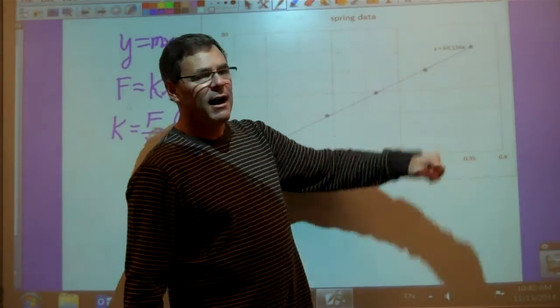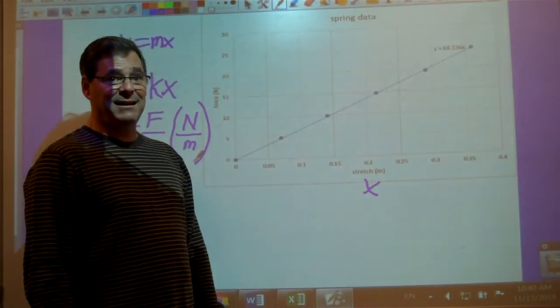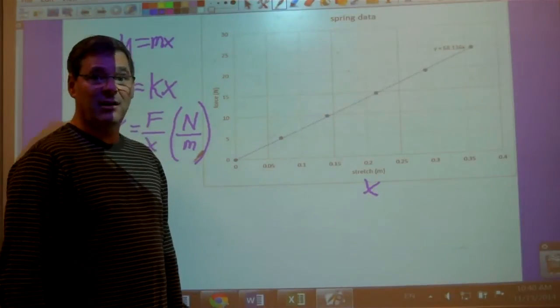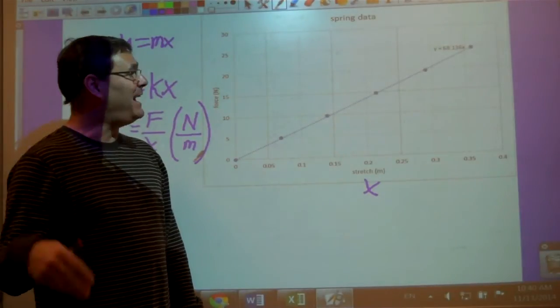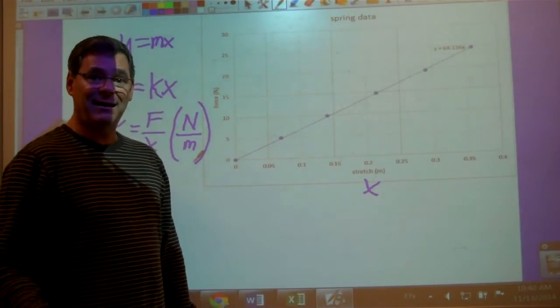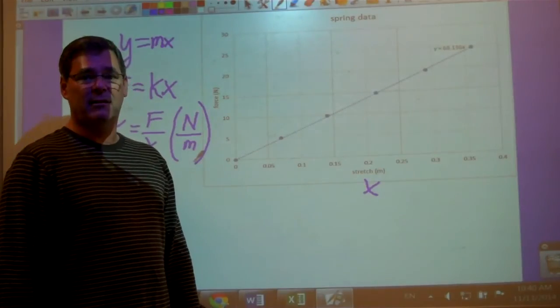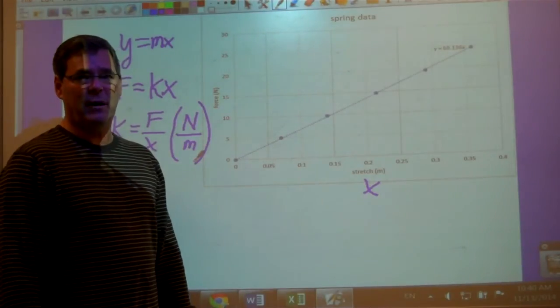And for this particular spring, I got a spring constant of 68 newtons per meter. Which means, if I hung 68 newtons of weight on that spring, it would stretch to a stretch amount of one meter.